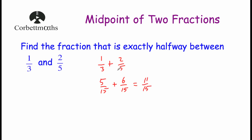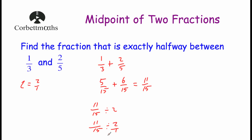Adding our two fractions together gives us a total of eleven-fifteenths. Now we need to divide by two, and that will tell us the fraction in the middle. So we take eleven-fifteenths and divide by two. Remember, two is the same as two over one, so it's eleven over fifteen divided by two over one. Dividing by a fraction, you can multiply by the reciprocal — we flip the fraction.